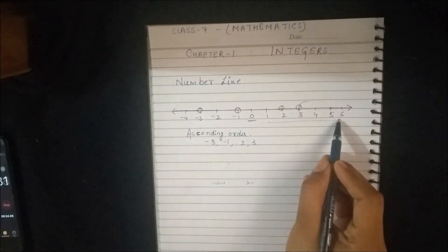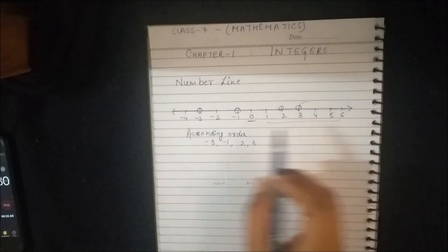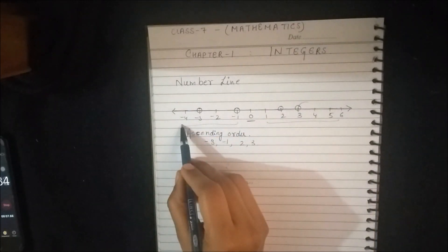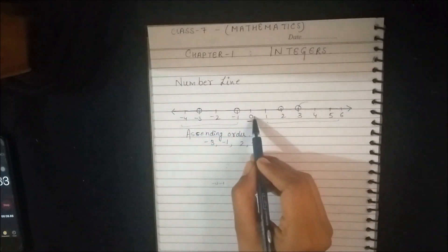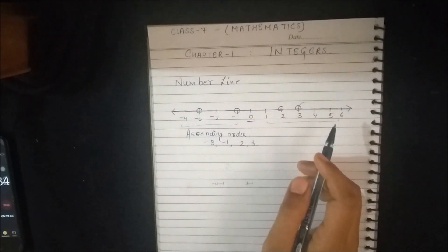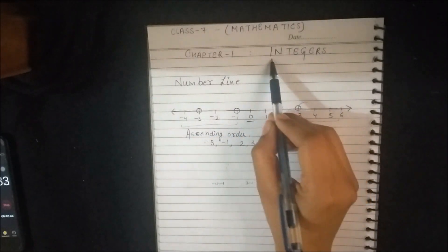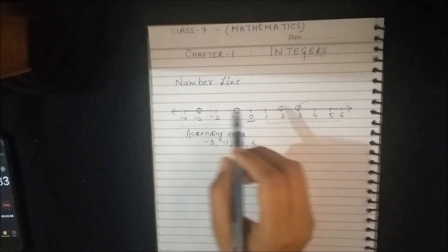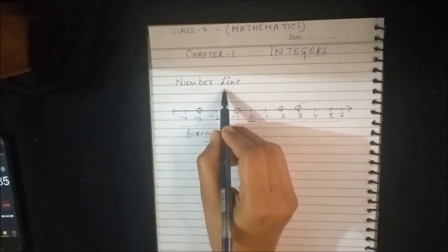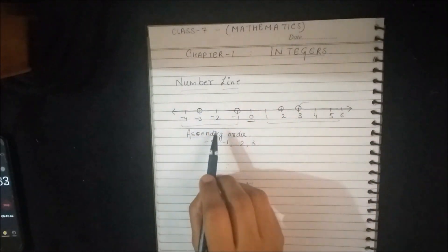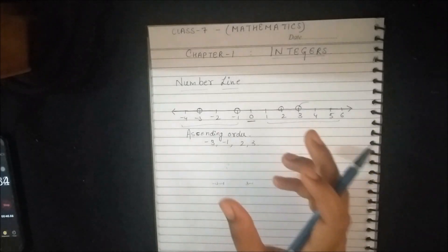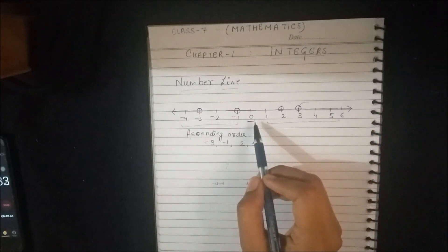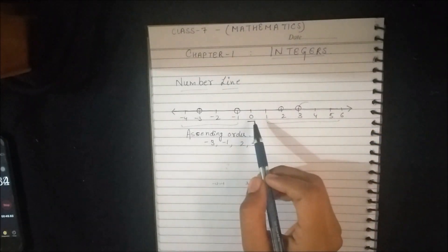All the positive numbers, whole numbers, negative whole numbers, and 0 collectively make the integers. We should be knowing what a number line is and how to represent all these positive numbers, negative numbers, and 0 on a number line.